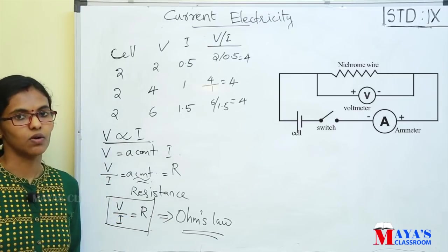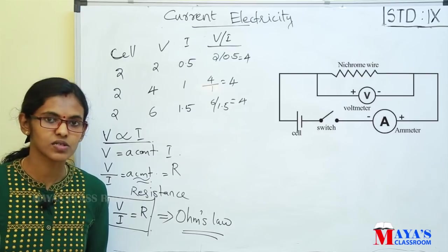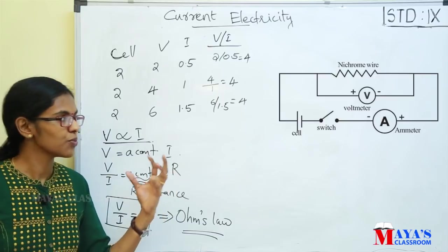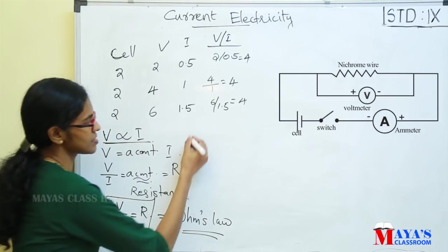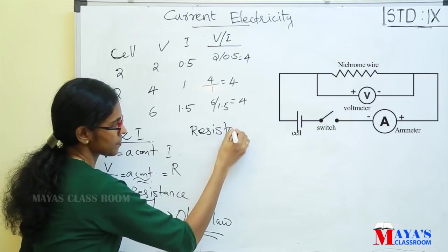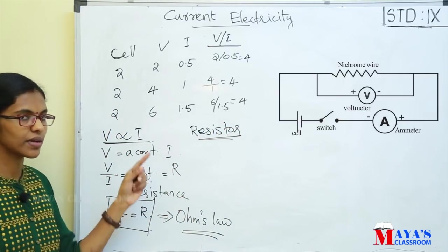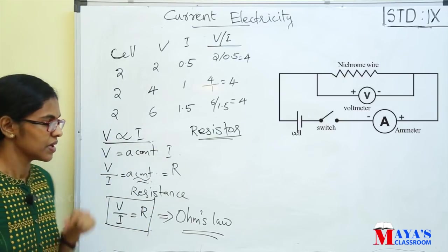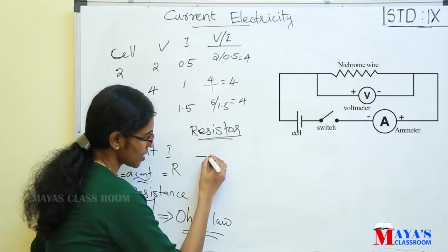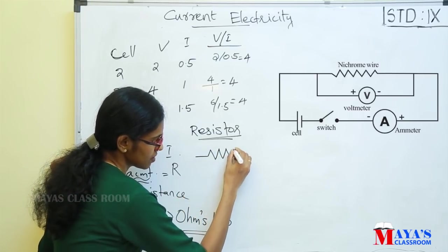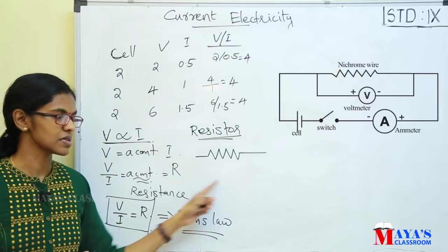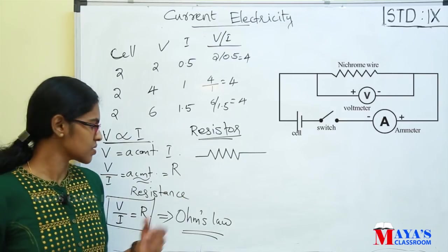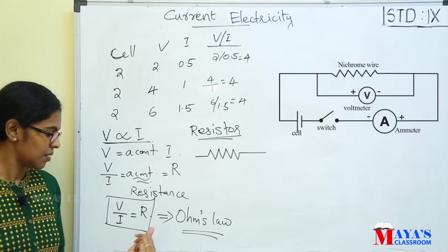This is very important. What is R? R is the resistance of a conductor. We call that conductor in a circuit a resistor. The symbol of a resistor — Ohm's law states V by I equals R.